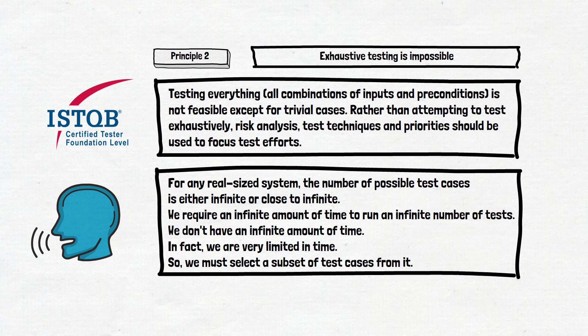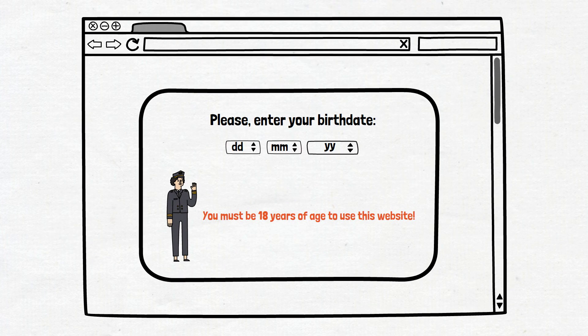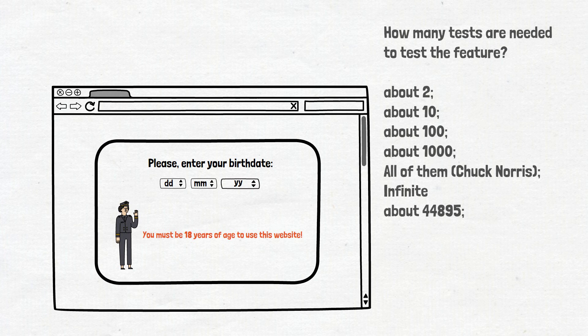Let's check if you got the point of the principle based on these theoretical words. Let's say you need to test not the website but a feature where you can enter a date of birth and the system validates if you can access the website. Please pause the video and think about how many test cases you need to run to test this feature, and we will provide a couple of answer options.